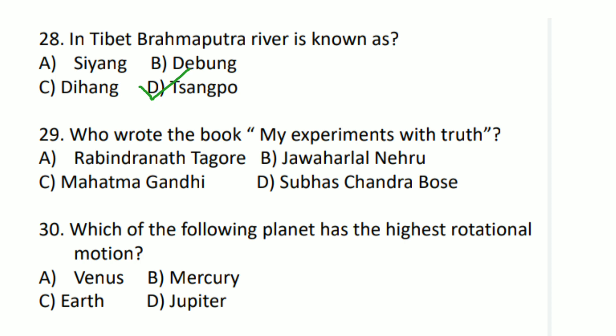Who wrote the book 'My Experiments with Truth'? Option C — Mahatma Gandhi. Question number 30: Which of the following planets has the highest rotational motion in our solar system? The answer is Option D — Jupiter.